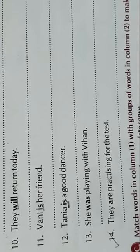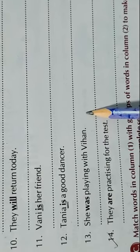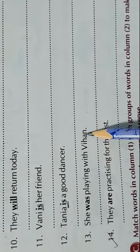You just have to find out the helping verb that is there in these sentences and place it in the beginning of the sentence and end with a question mark. She was playing with Vihan, so what is the helping verb? Yes, was. Was she playing with Vihan?